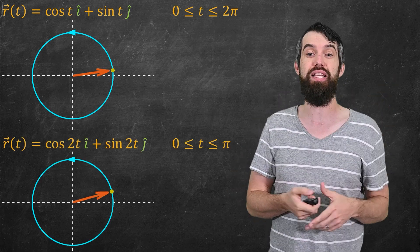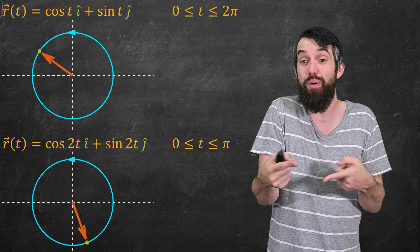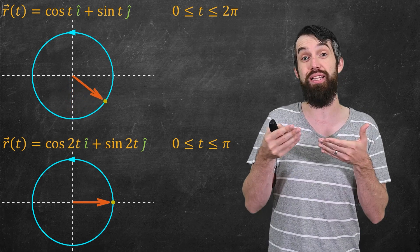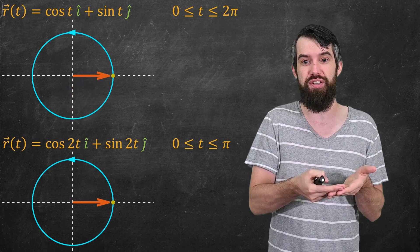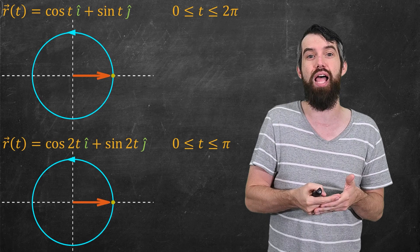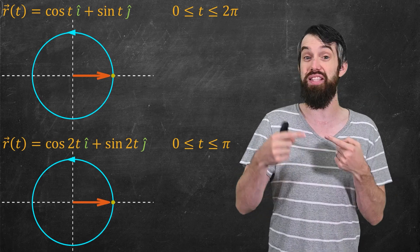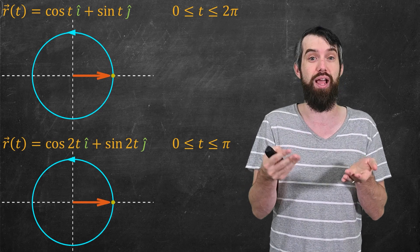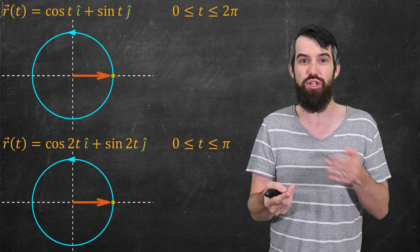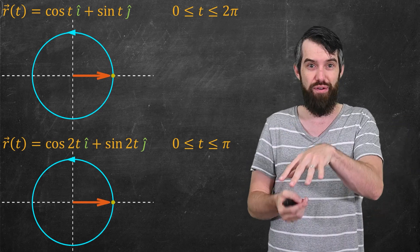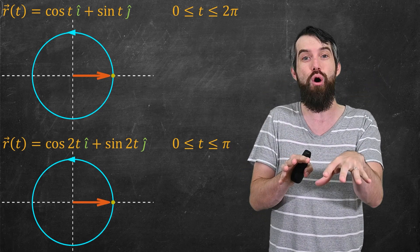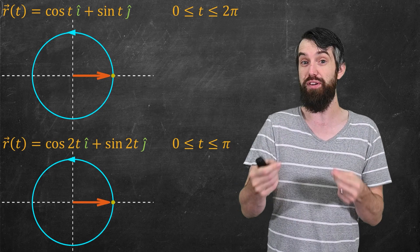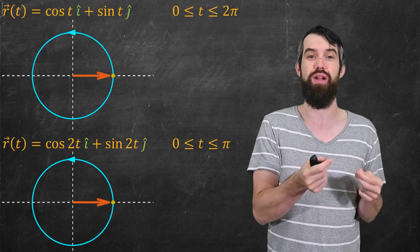But then any specific particle, or any car along the road, can travel a particular path with particular parametrization in time. For example, this is a different car that travels the same curve, but with a different path. It travels it twice as fast. And notice that its parametrization, its r of t, is now cosine of 2t and sine of 2t. And indeed, the t is now between just 0 and π, versus 0 and 2π as it was before. So the point is, you can have one underlying curve, that sort of thing that exists separate from how anyone might try to travel along the curve. But you can have multiple different paths and multiple different parametrizations.